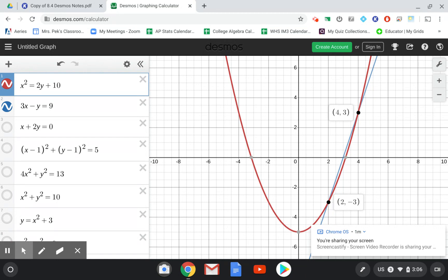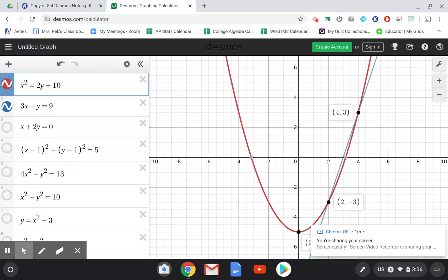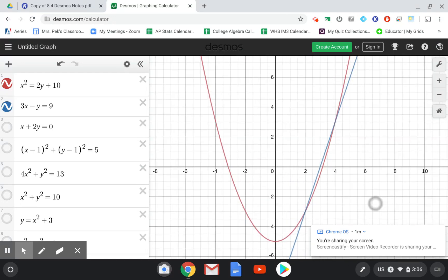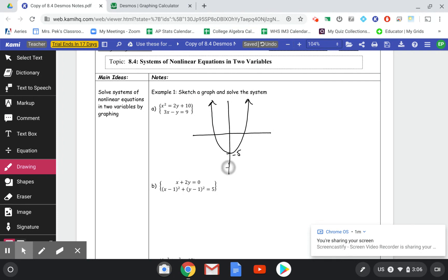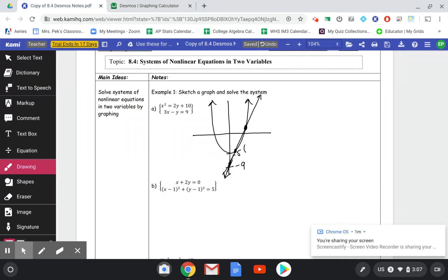So when we sketch this, I do want it to be fairly accurate, so I want to make sure that your points kind of go through where they're supposed to on the graph. So here I know that my parabola goes down to negative 5 and goes something like that. And then my line goes down to negative 9. Okay, so I'm going to go down to negative 9 and do a line through there. Make sure it crosses at those two points. And then those two points are going to be 2, negative 3, and 4, 3. So this is the point 2, negative 3, and the point 4, 3, and those are our solutions.